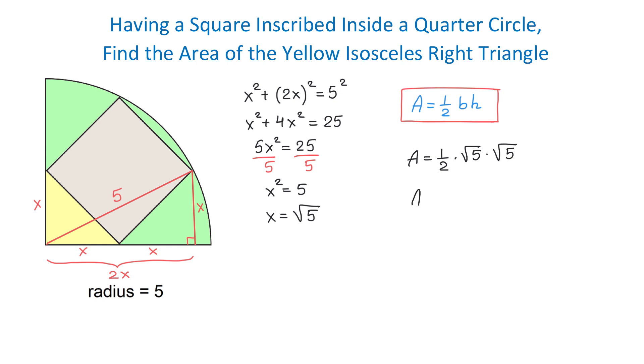Then, √5 × √5 = 5 and 1/2 of 5 is 2.5. So we found the area of the yellow triangle and it is 2.5 square units. Thank you for watching.